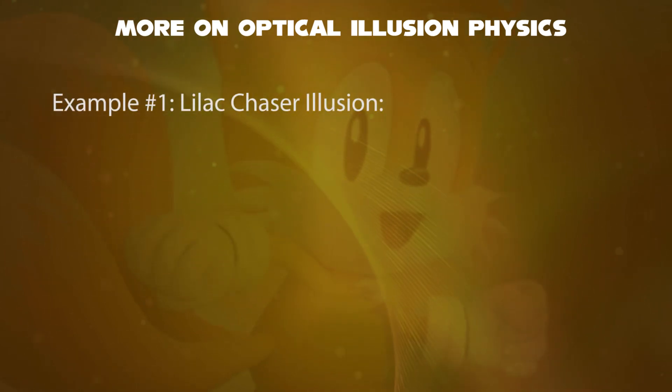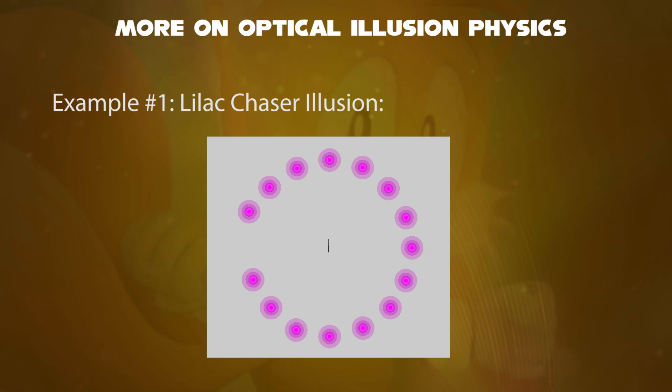The first example is the Lilac Chaser illusion. This illusion shows you numerous dots arranged in a circle, and are magenta in color. One by one is the space where each dot disappears, then the next dot disappears and so on, moves in the clockwise direction.